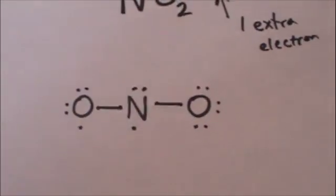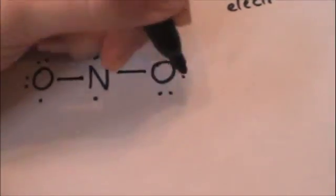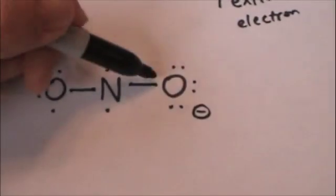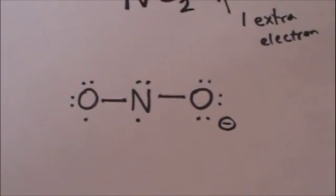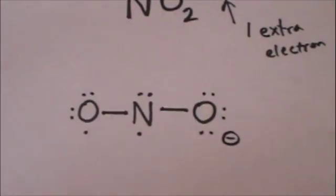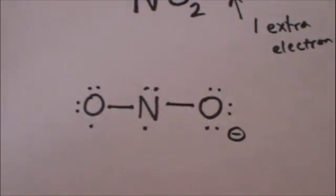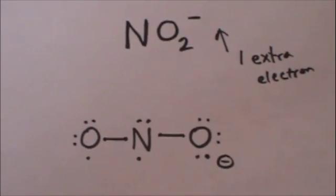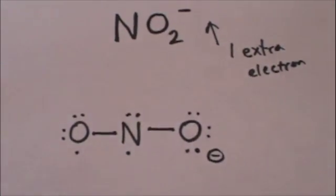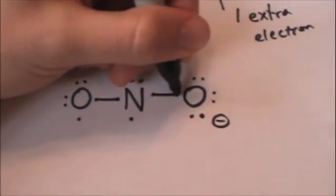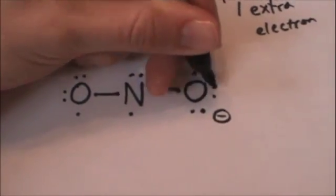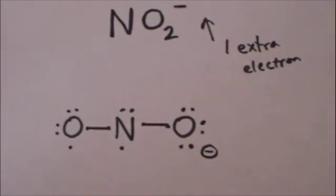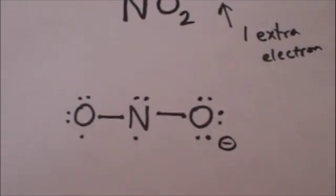So we'll give that oxygen its extra electron and now it will have a negative charge because there are 2, 4, 6, 8 electrons around that oxygen. It's happy, it's got its octet, but we had to put in that extra electron from that negative charge so we give that oxygen a formal negative charge. It used to have six electrons, now it's got seven, so it has a negative formal charge.